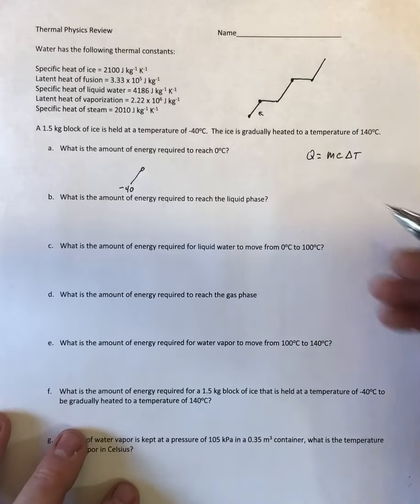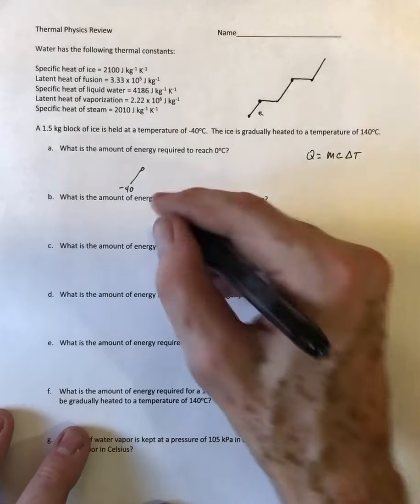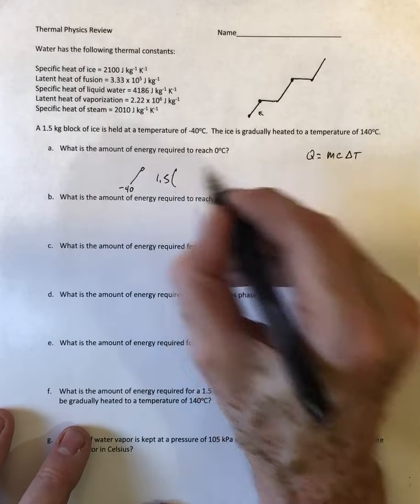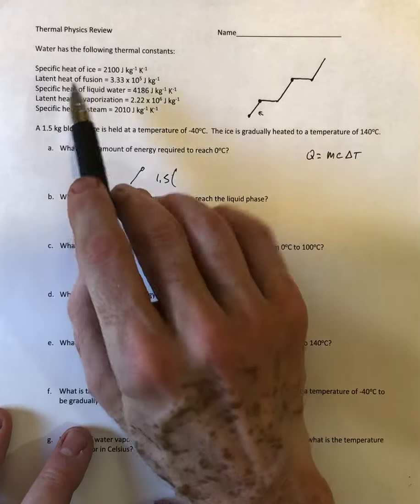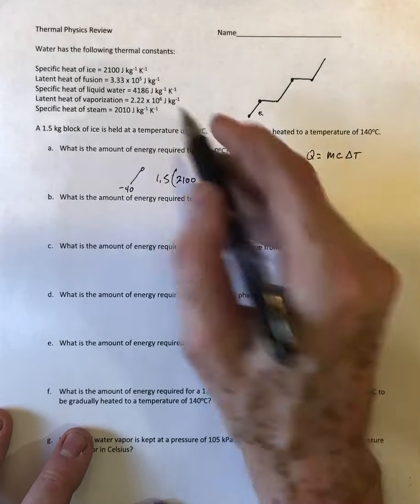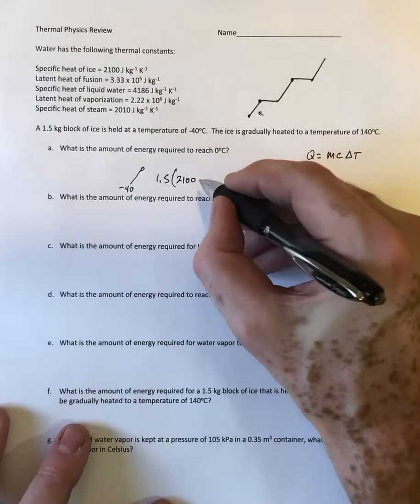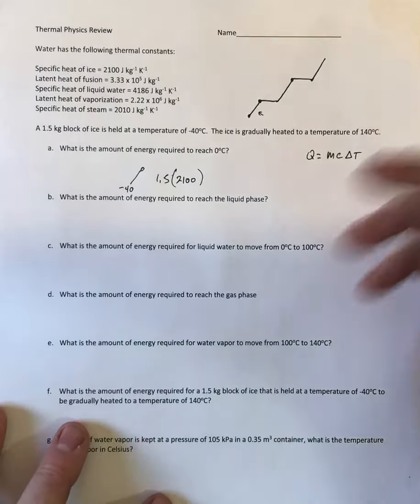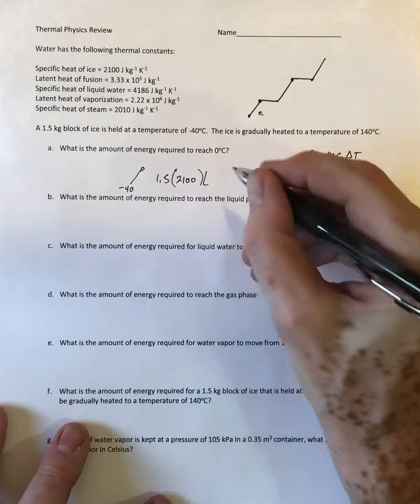The mass is given as 1.5, we're going to multiply that by the specific heat of ice which is 2100, and that's joules over kilograms Kelvin. It doesn't really matter if you use Kelvin or Celsius in this case since they're both on the same scale.